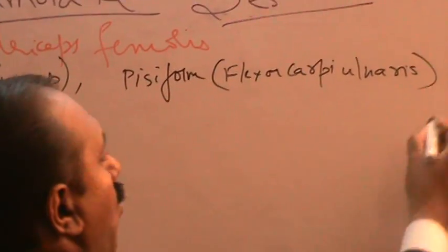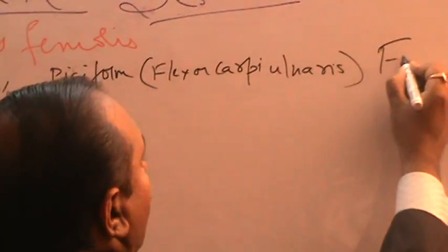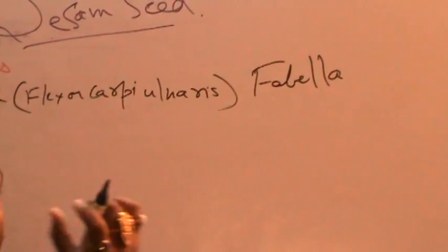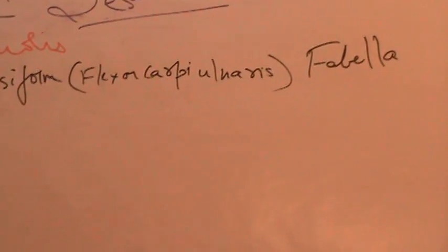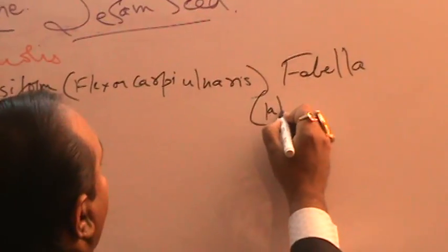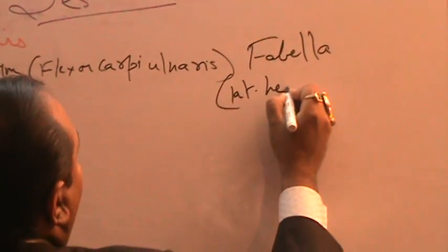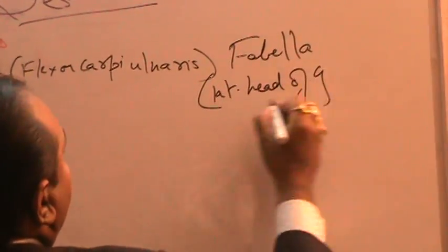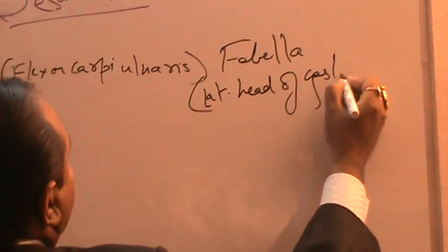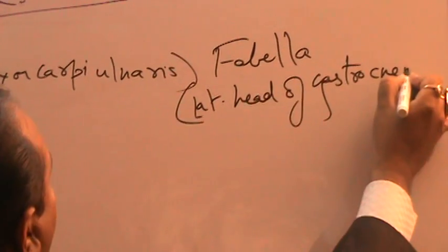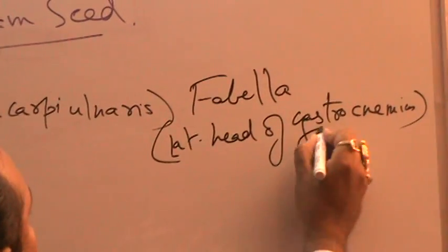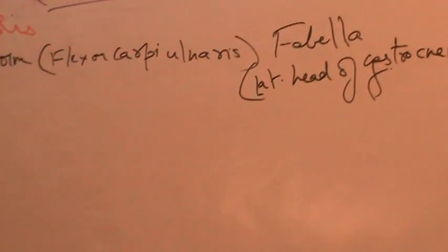There is one more sesamoid bone called the fabella. This fabella develops within the lateral head of gastrocnemius — it is the third sesamoid bone present in the body.